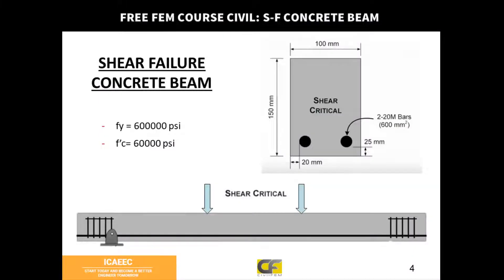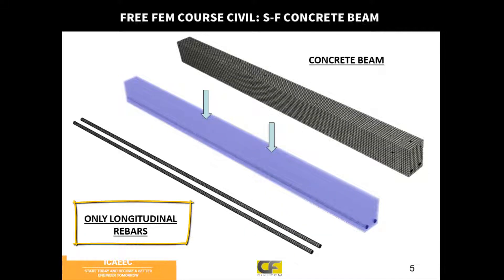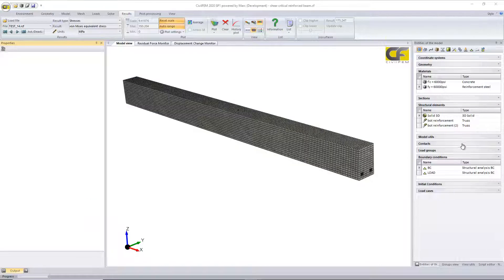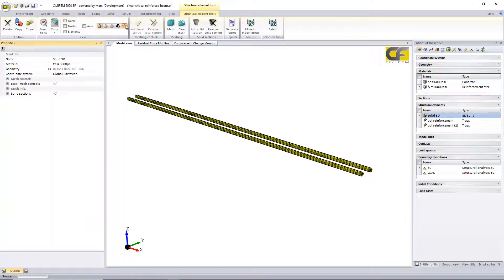The next model is shear failure. In this case, we are not adding shear reinforcement — no stirrups. Only bottom reinforcement, which is the same as in the last over-reinforced bending model, just removing the shear reinforcement. Here is the model.